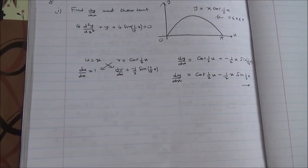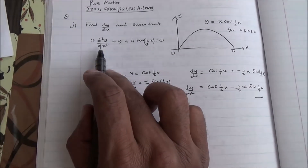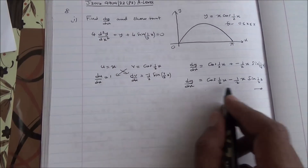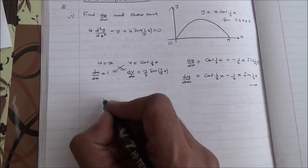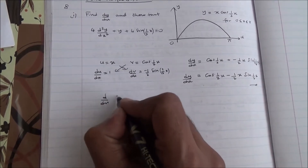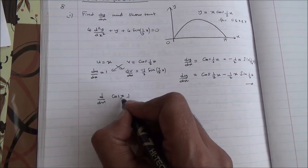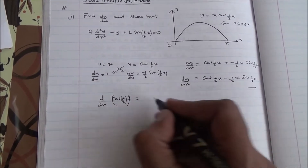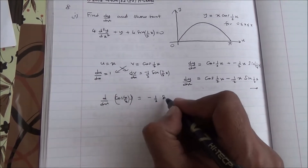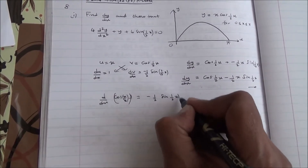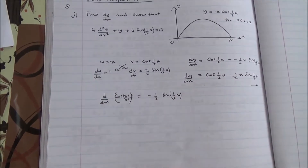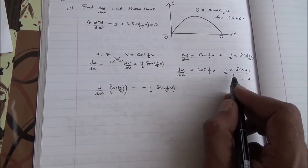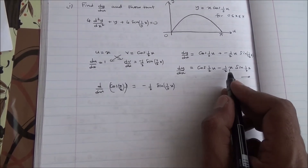Now let us find d²y/dx². We differentiate dy/dx and then show that the expression equals 0. Differentiating cos(x/2) with respect to x gives minus half sin(x/2). So that part is done. Now we differentiate the second term, which requires the product rule again.